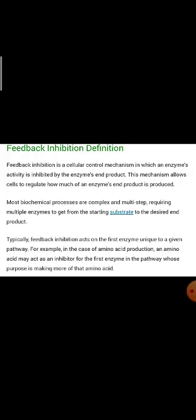Feedback inhibition is a cellular control mechanism in which the enzyme activity is stopped by the enzyme's end product. The product in the pathway itself stops this process - the product being formed as a result of enzymatic activity itself stops its own process in the pathway. This is called feedback inhibition.